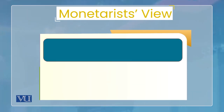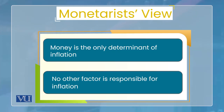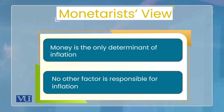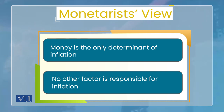Quantity theory of money سے further monetarist view آتا ہے. Monetarist view میں Milton Friedman کے مطابق only money supply can drive inflation. Monetarist view یہ ہے کہ money is the only determinant of inflation — no other factor is responsible for inflation. اور یہ ہم اس lecture میں اور آگے کے lectures میں discuss کریں گے کہ اگر کسی اور reason سے inflation آتا بھی ہے تو وہ temporary ہوتا ہے — long lasting inflation صرف اور صرف money سے ہی drive ہوتا ہے.